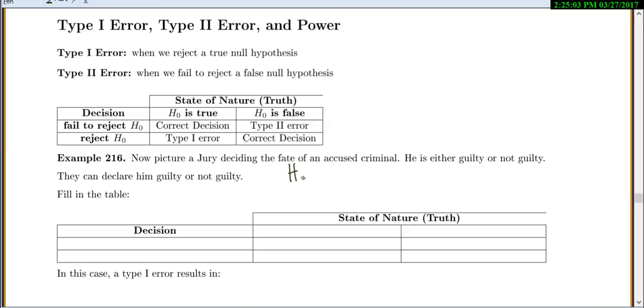Let's first decide what our null and alternative would be. The null is always your status quo, or what you're assuming is true until you know otherwise. In the legal system, we assume that they're innocent until we hear otherwise, so the null is that they are innocent and the alternative is that they are guilty.